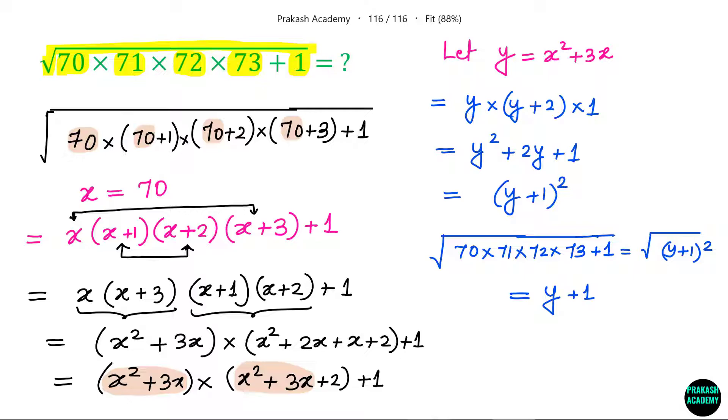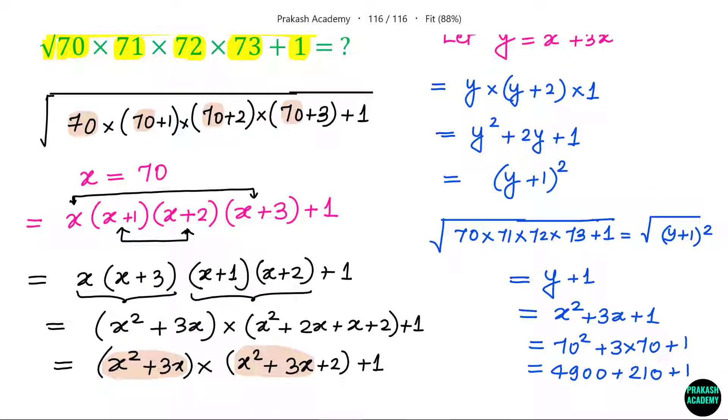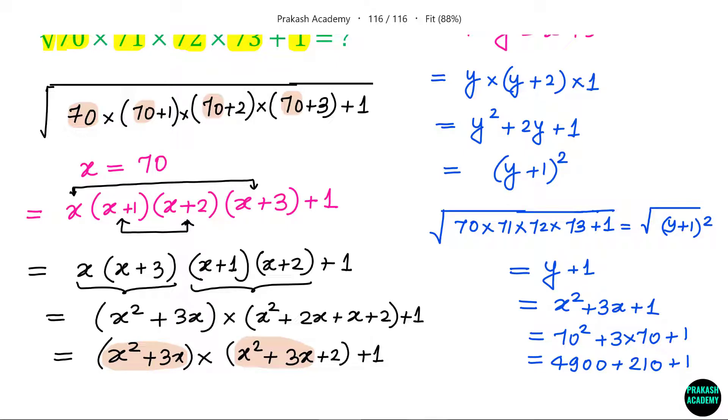But what is the value of y? y is basically x square plus 3x. So this becomes x square plus 3x plus 1 where x is 70. This becomes 70 square plus 3 times 70 plus 1. This is 4900 plus 210 plus 1. This number equals 5111.